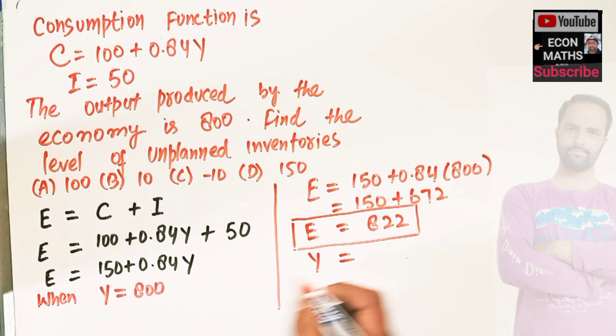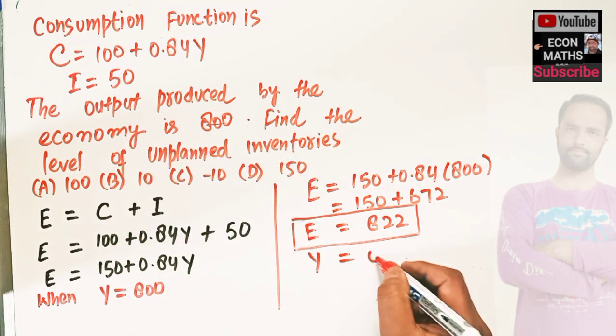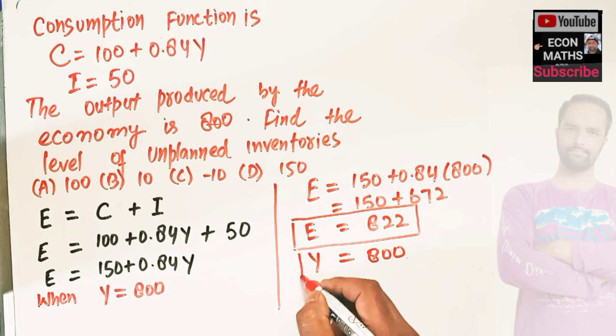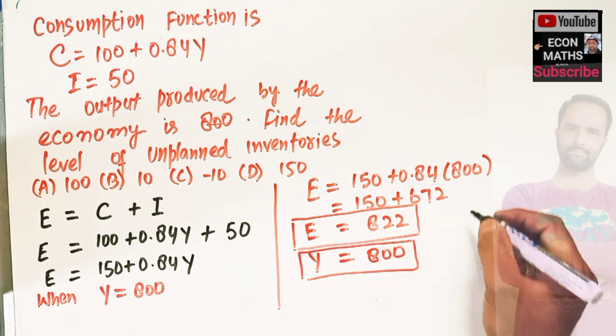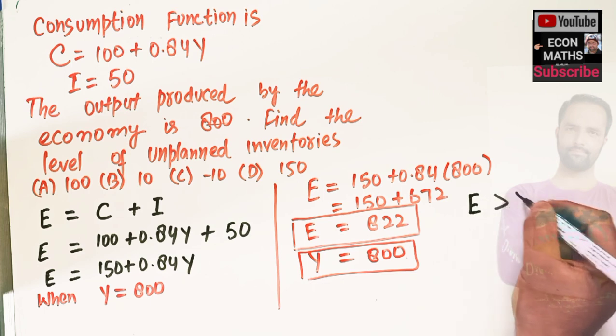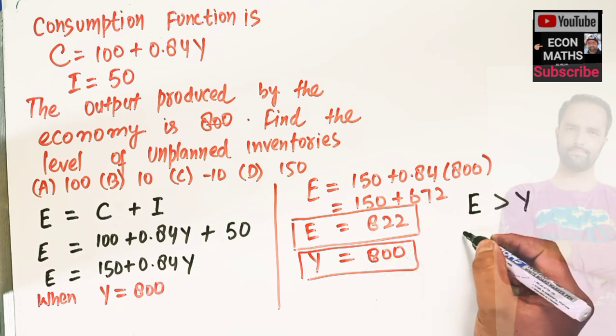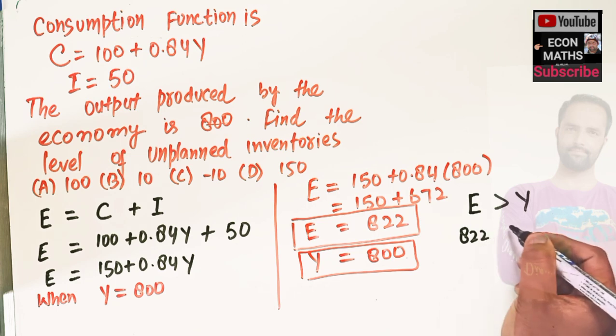Output is equal to 800. Here you can see one thing that our expenditure is greater than output because expenditure is 822 and output is only 800.